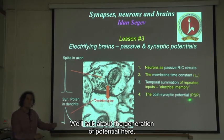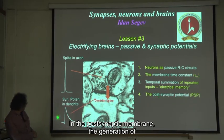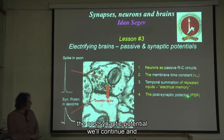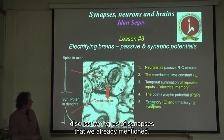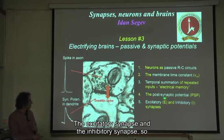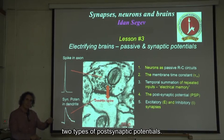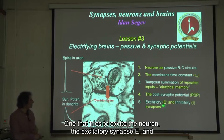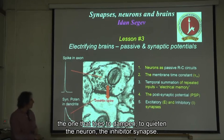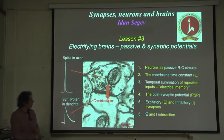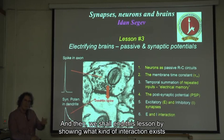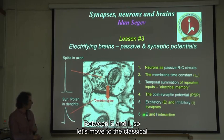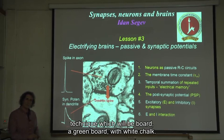We'll talk about the generation of the post-synaptic potential. We'll discuss two types of synapses: the excitatory synapse and the inhibitory synapse — two types of post-synaptic potentials. One that tries to excite the neuron, the excitatory synapse, and one that tries to dampen, to quieten the neuron, the inhibitory synapse. And then we shall end this lesson by showing what kind of interaction exists between excitation and inhibition, between E and I. So let's move to the classical technique, a green board with white chalk.